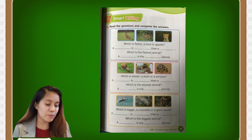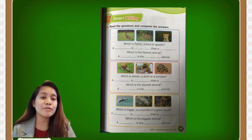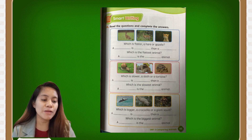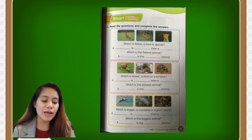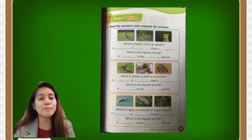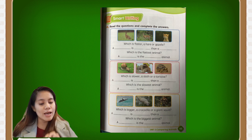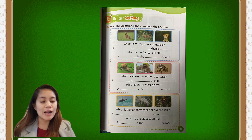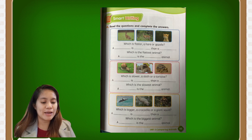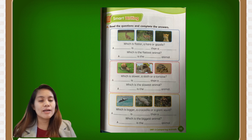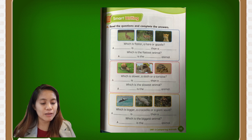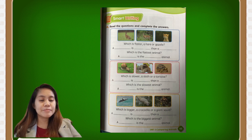For your workbook, open to page 45 and do the smart writing. For letter A, write the questions and complete the answers. We have three animals — which is faster, a hare or a gazelle? You write the correct answer: a gazelle is faster than a hare. Which is the fastest animal? A cheetah is the fastest animal. The answers are in the picture.